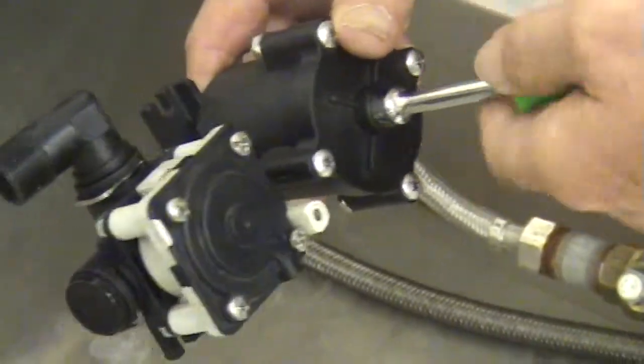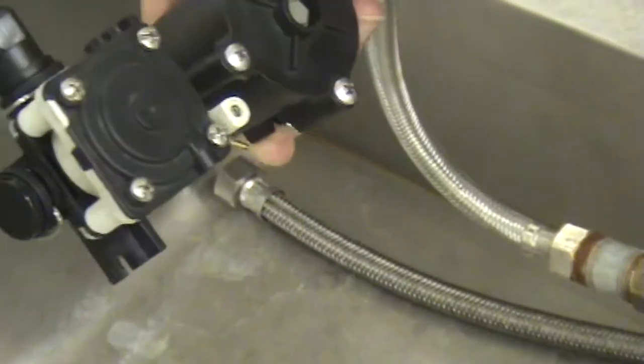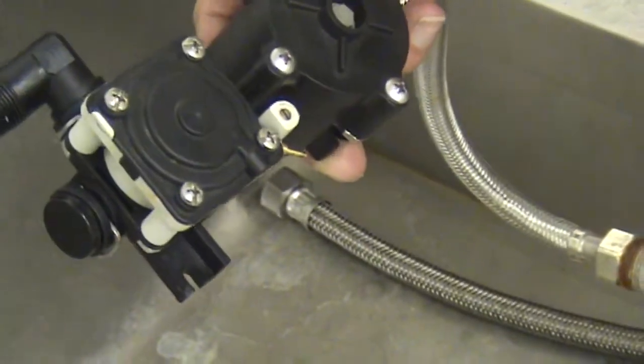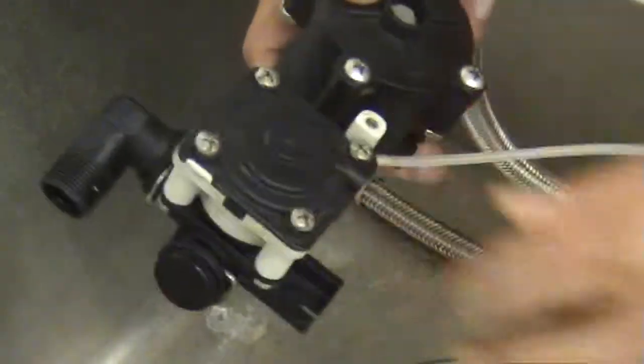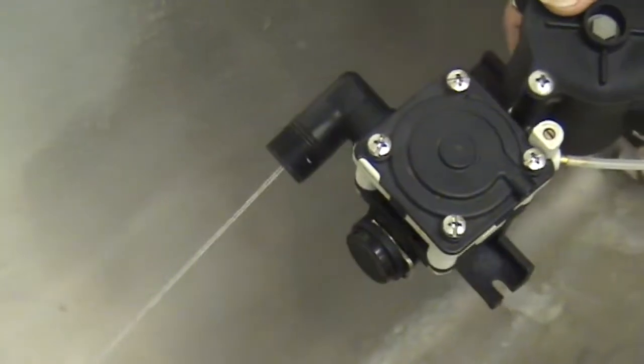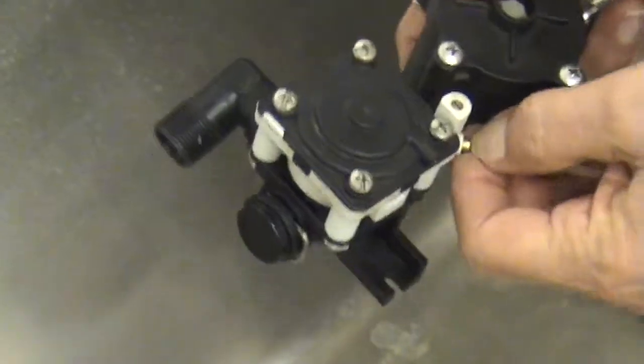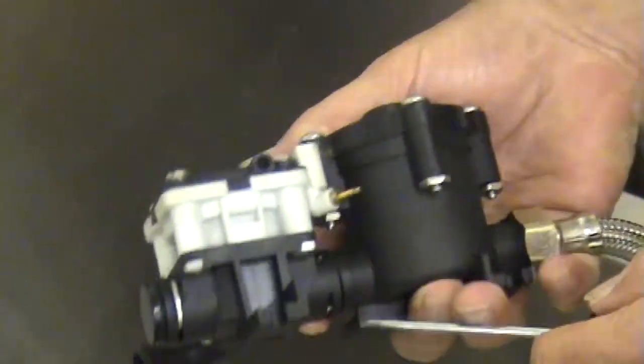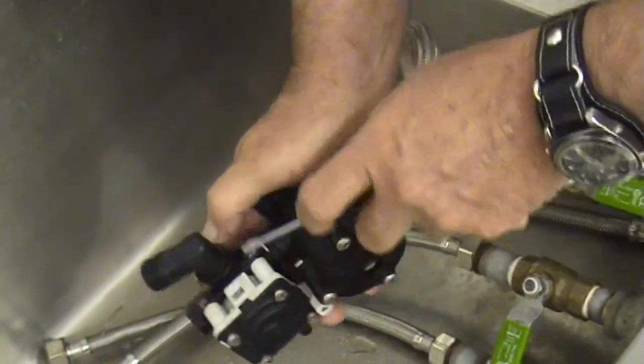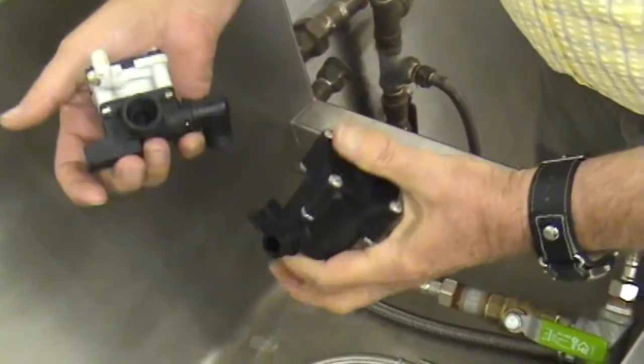At this point, we want to relieve the pressure on the valve by connecting an operator. That takes the pressure off the valve. Then we want to pull this pin and separate the sections. Pull this apart.